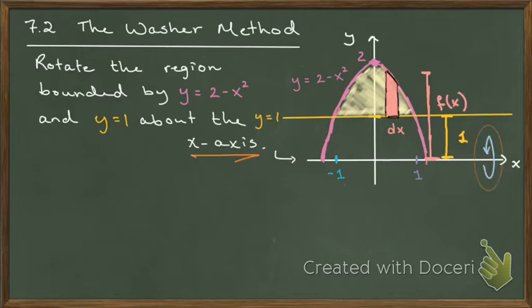I'm now going to rotate about the x-axis instead of y equals 1. I want to describe the changes there, and use that to develop what we call the washer method. The first thing we notice is that now the area we're rotating is removed from the axis we're rotating it about.